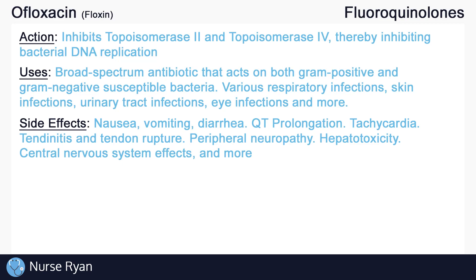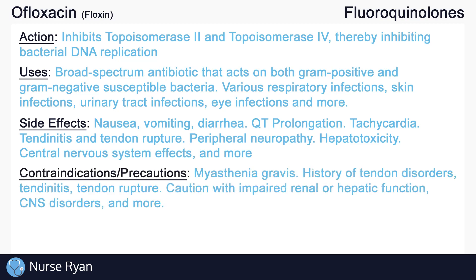What are some of the contraindications and precautions? Fluoroquinolones should be avoided in those with myasthenia gravis, as they may exacerbate muscle weakness. Also avoid fluoroquinolones in those with a history of tendon disorders or who have experienced tendinitis or tendon rupture. Patients above 60 years old, patients taking corticosteroids, and patients with heart, kidney, or lung transplants have an increased risk for tendinitis or tendon rupture. Use cautiously in those with impaired renal or hepatic function, those with CNS disorders, and more.